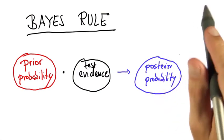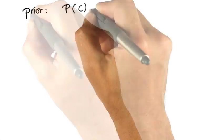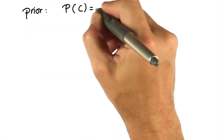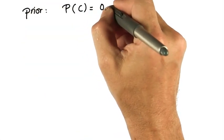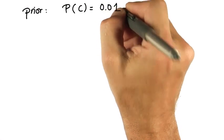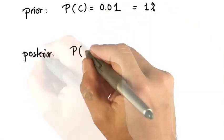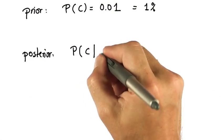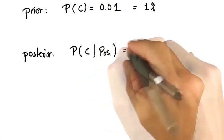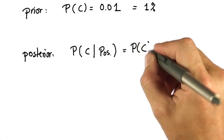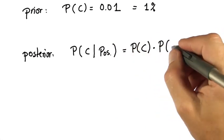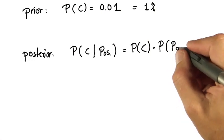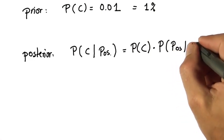So let's make this specific. In our cancer example, we know that the prior probability of cancer is 0.01, which is the same as 1%. The posterior of the probability of cancer given that our test is positive, abbreviated here as positive, is the product of the prior times our test sensitivity, which is the chance of a positive result given that I have cancer.